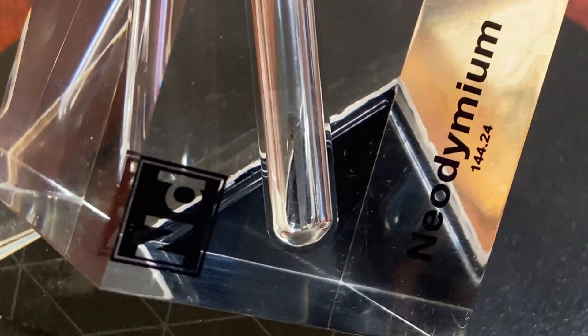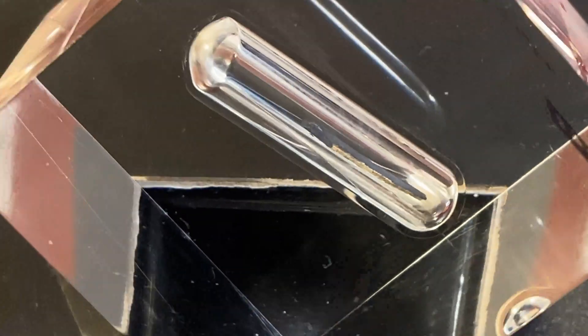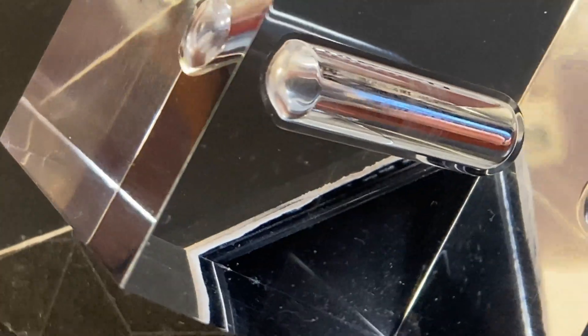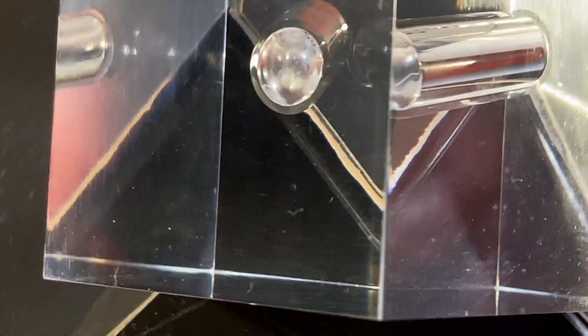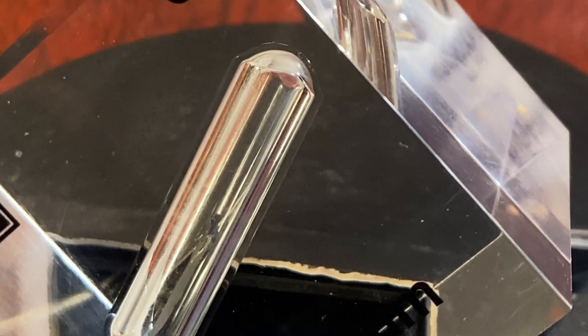But where does neodymium get its name from? The element's name is derived from the Greek words neos, meaning new, and didymos, meaning twin. This name reflects its close relationship with the element praseodymium, from which it was separated.